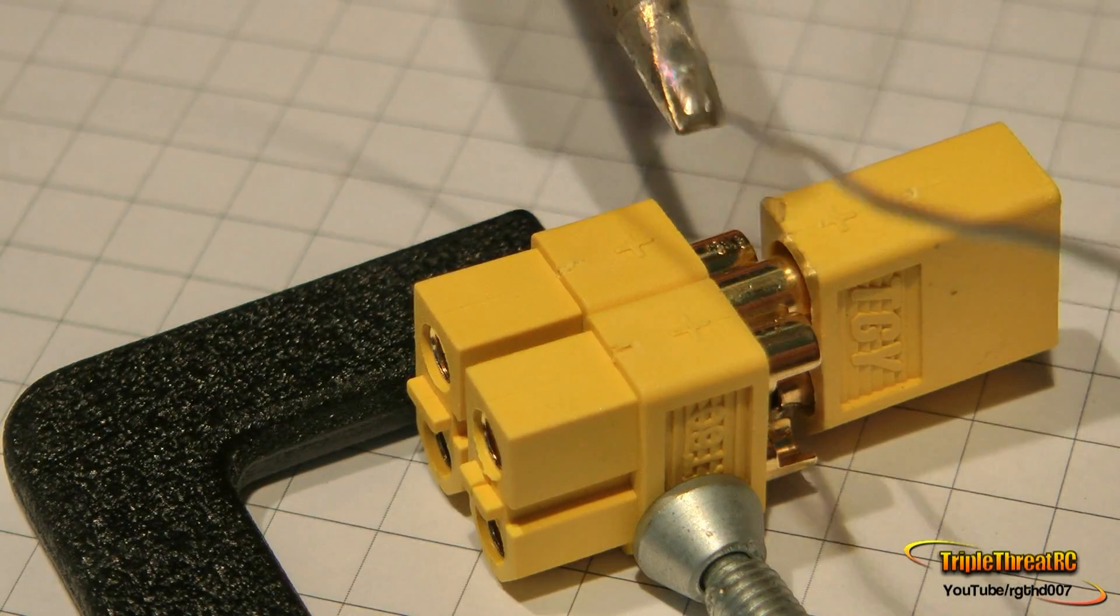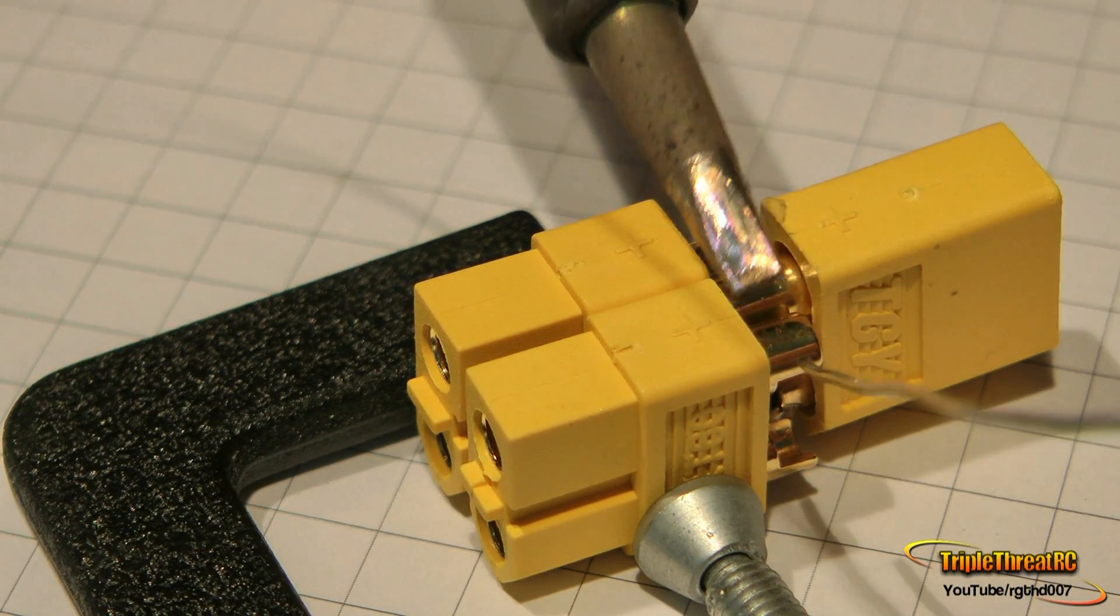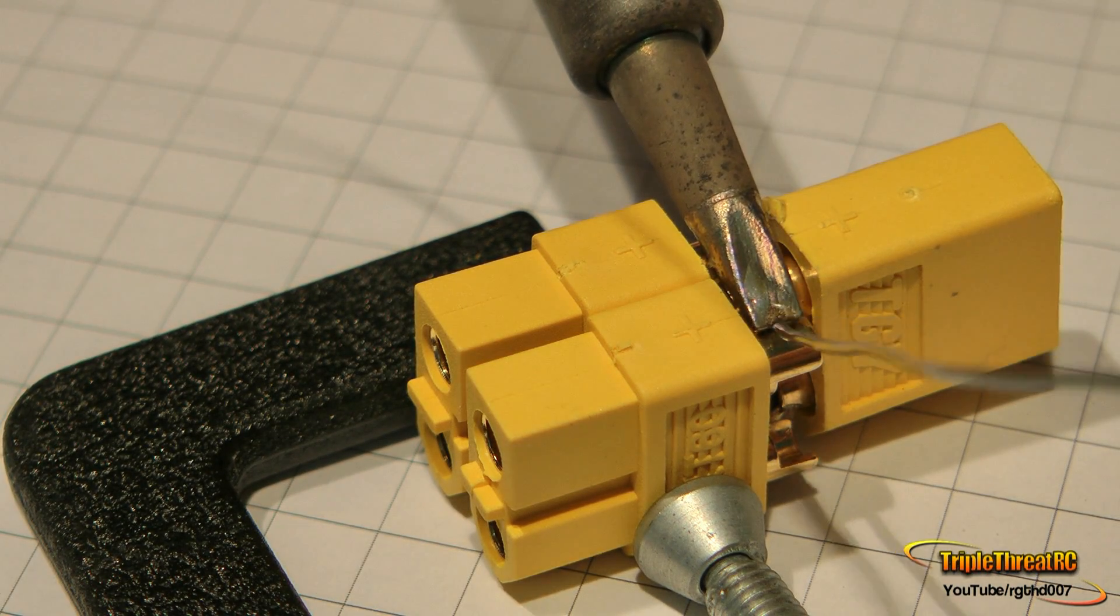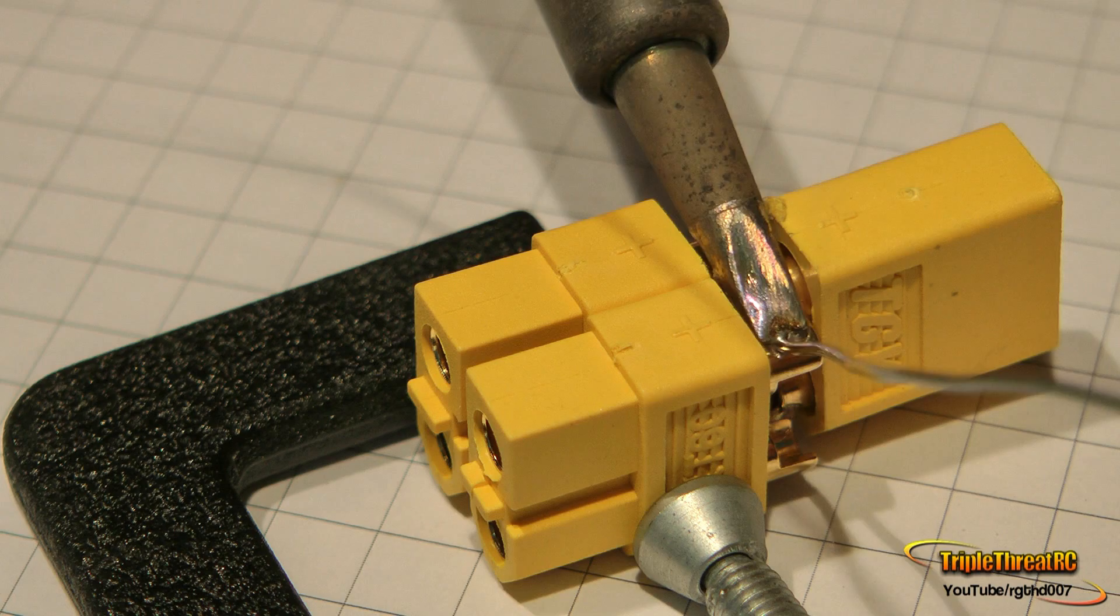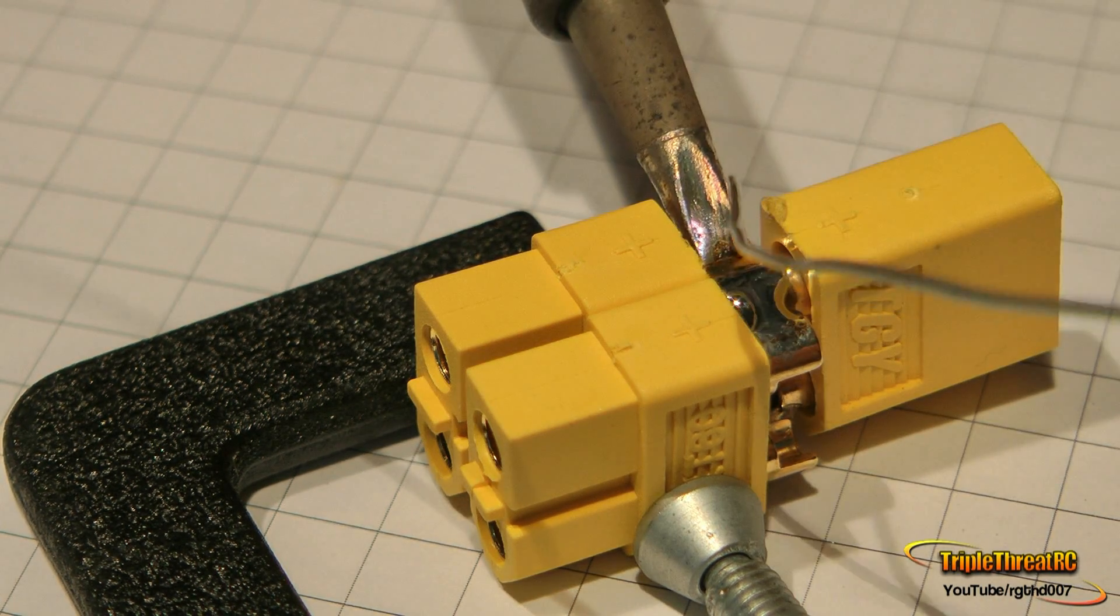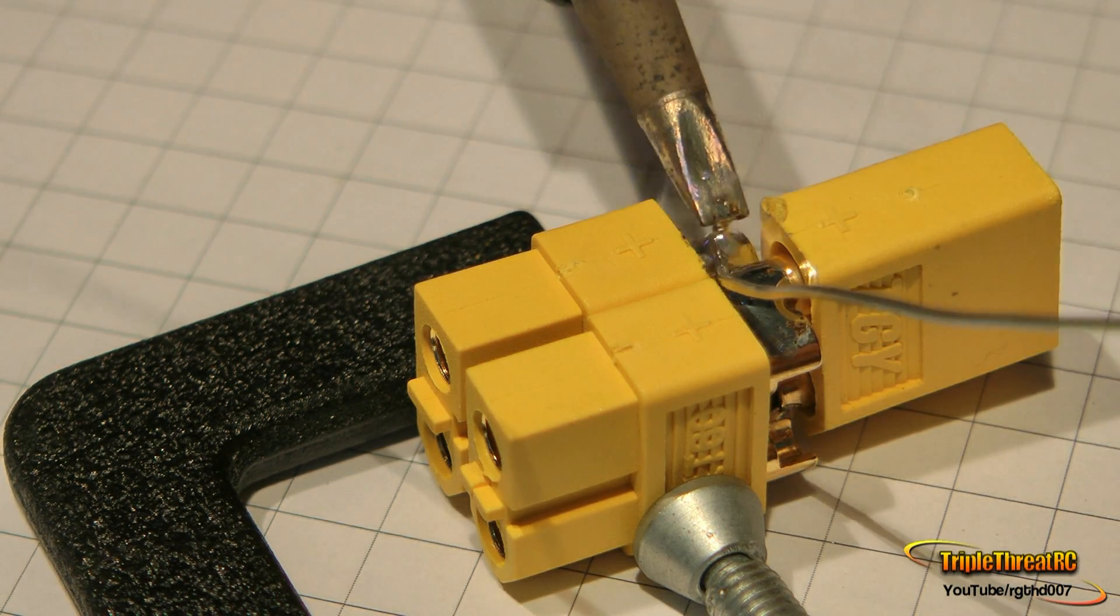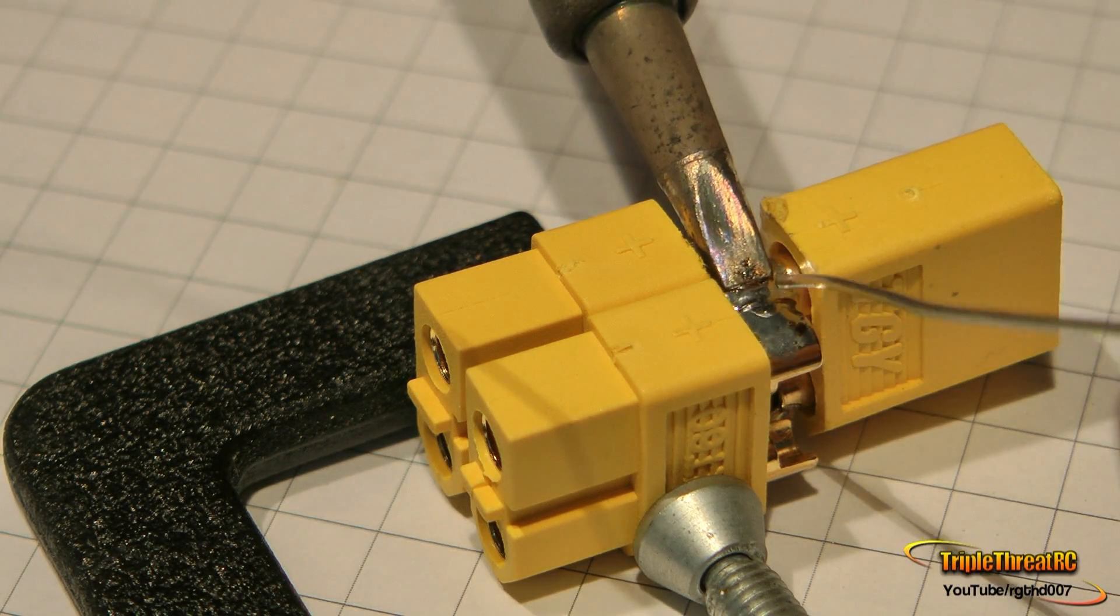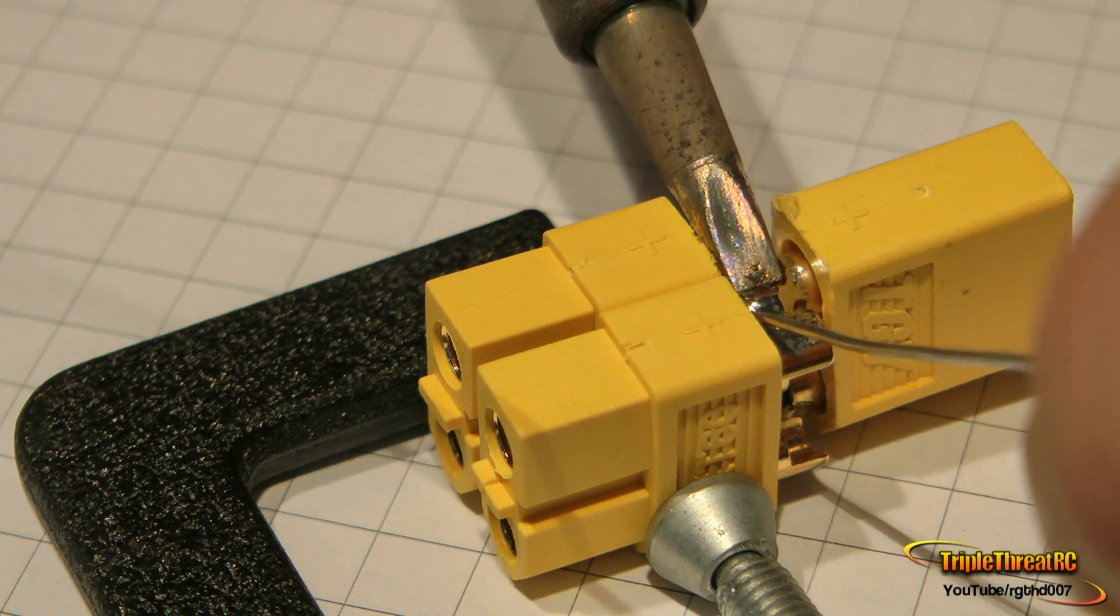Once you get the first side done, it's just a matter of flipping it over and doing it one more time. I probably don't need to say this, but just make sure that when you align these things in preparation for soldering, you've got all of your polarities correct. You want all of the positive sides up on all three connectors, and when you flip it over, you should see all three negatives.